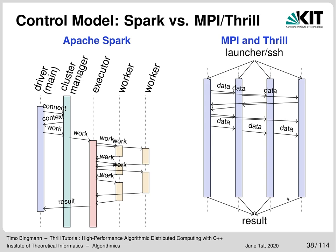Apache Spark follows a master-worker model: there is a driver program containing RDD operations, which is transmitted to a long-running cluster manager acting as a high-level resource scheduler. The cluster manager spawns one or more executors which manage data and code, using the master-worker paradigm for smaller short-lived jobs. MPI and Thrill follow a different approach: at launch time a fixed number of threads is started and they collectively run the program. This model allows workers to synchronize implicitly, but requires one to think more about how to balance the work.